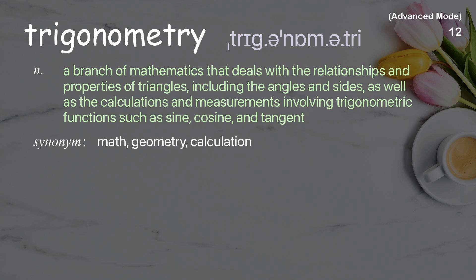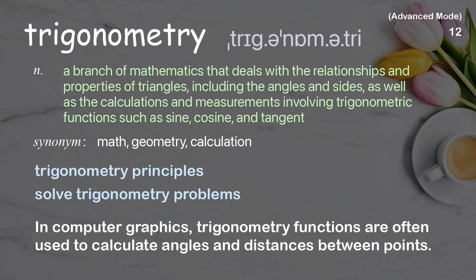Trigonometry. A branch of mathematics that deals with the relationships and properties of triangles, including the angles and sides, as well as the calculations and measurements involving trigonometric functions such as sine, cosine, and tangent. Examples: Trigonometry principles. Solve trigonometry problems. In computer graphics, trigonometry functions are often used to calculate angles and distances between points.